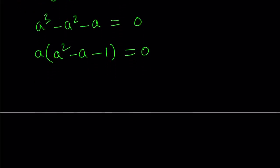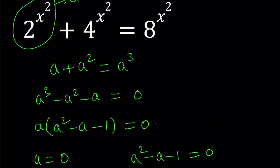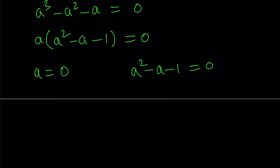Obviously, a equals 0 is a solution, or is it? Let's find out. And the other one comes from the quadratics. Let's go ahead and set aside the quadratic for now and focus on a equals 0. What is a? A is 2 to the power x squared. So let's go ahead and back substitute. 2 to the power x squared equals 0. What is the x value?